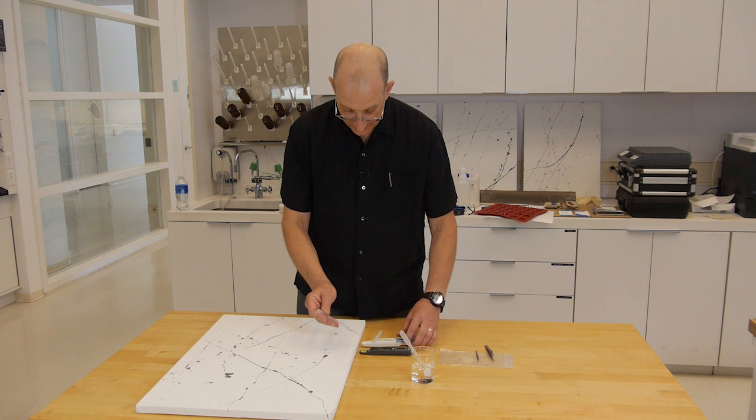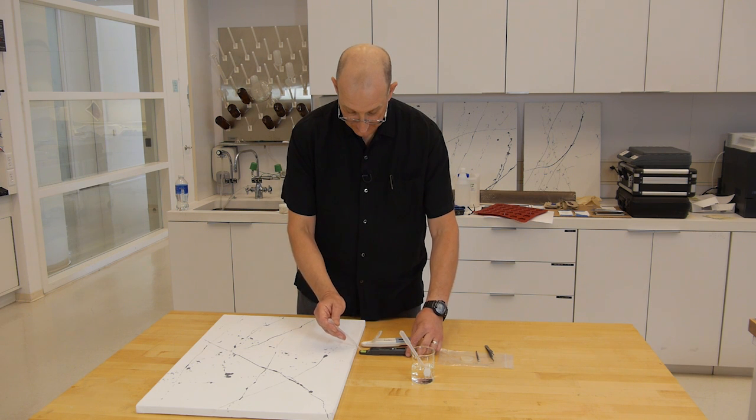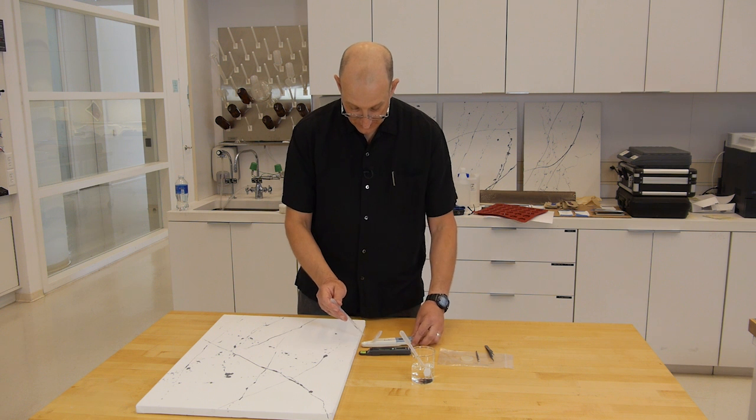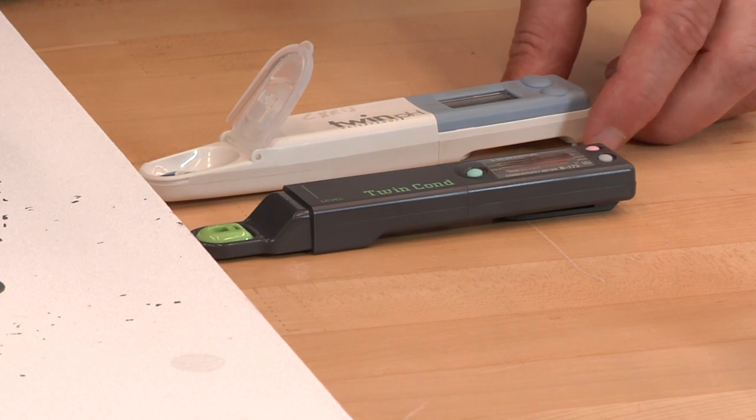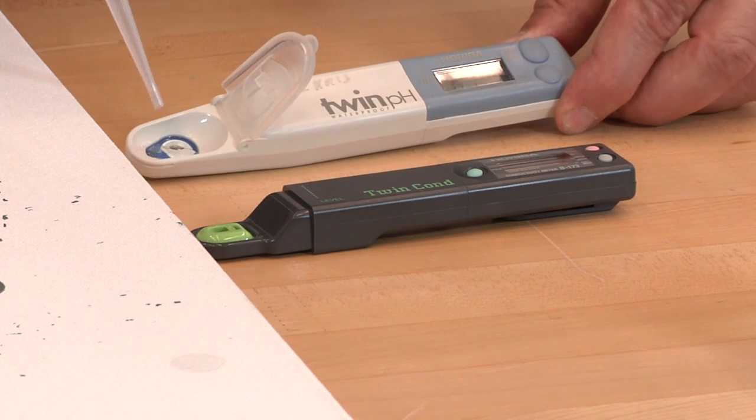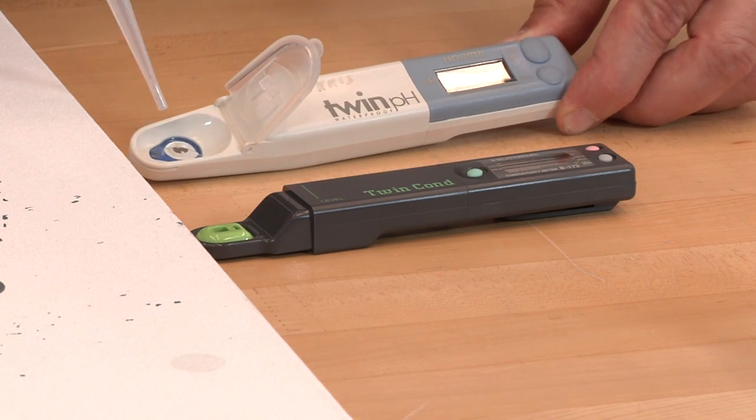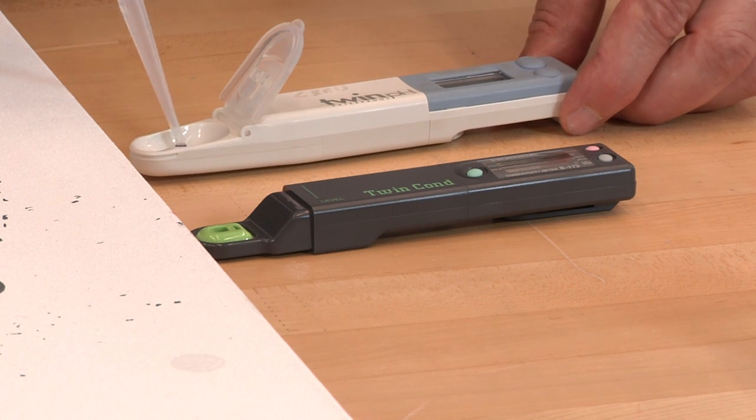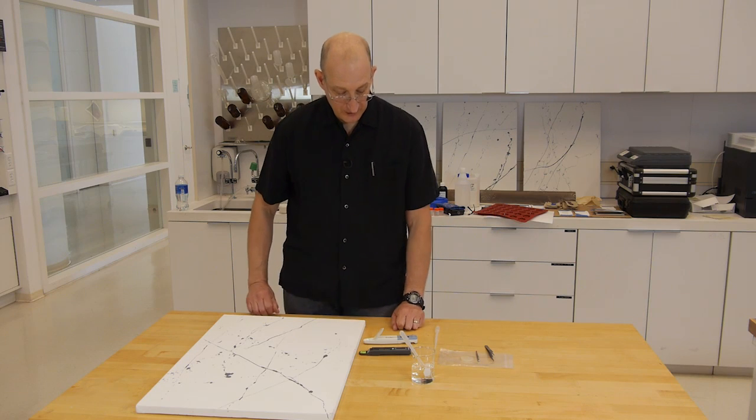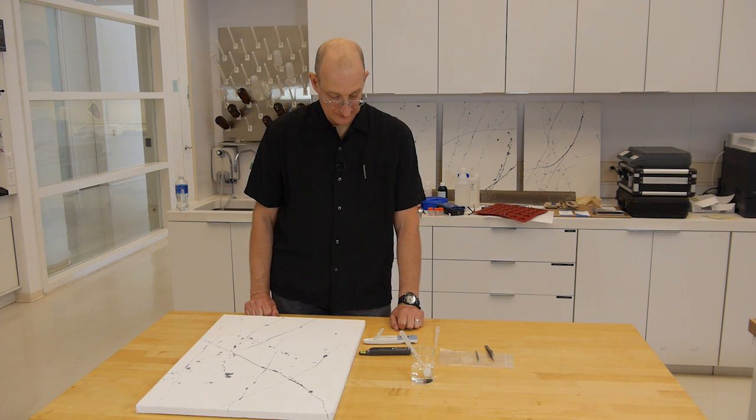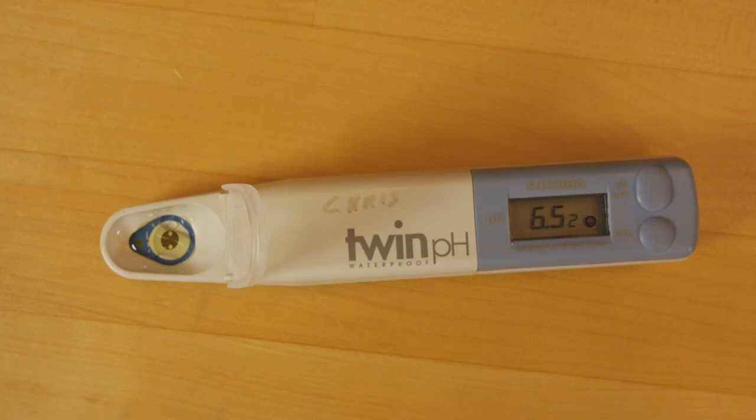Now we take that drop of water out and put it onto the pH meter. As with the calibration step, we want to make sure that we have both the measuring electrode and the reference electrode dampened and in contact or bridged by the water. Again we wait for a happy face. And we have our happy face, and our pH is 6.52. So we've determined both the pH and conductivity of this surface.